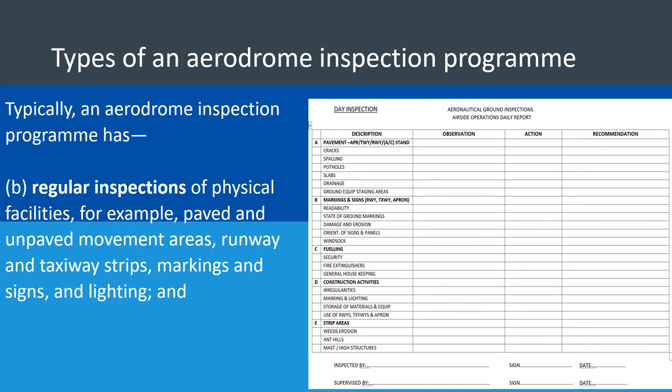You could also have regular inspections for physical facilities — for example, paved and unpaved movement areas, runway and taxiway strips, markings, signs, and lighting. These things must be inspected at regular intervals, at fixed periods. Markings are consistently being used, so you must inspect them regularly to monitor their effectiveness and ensure they serve their purpose.